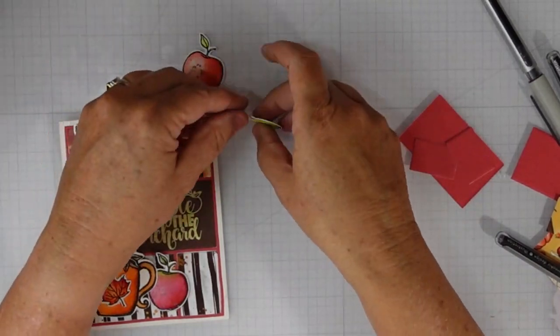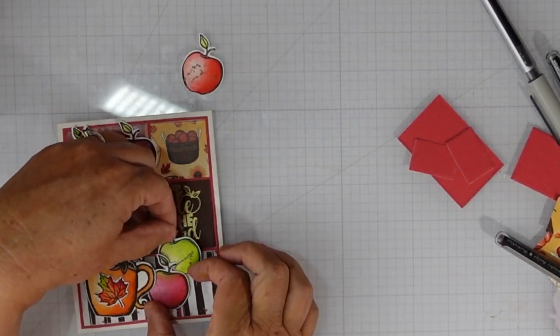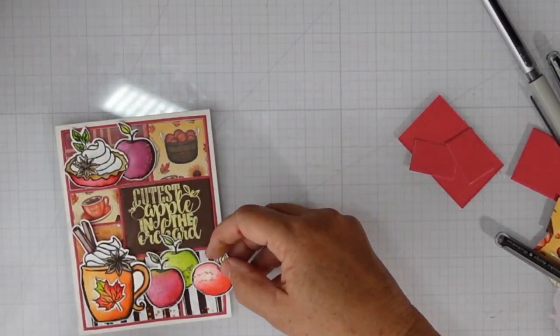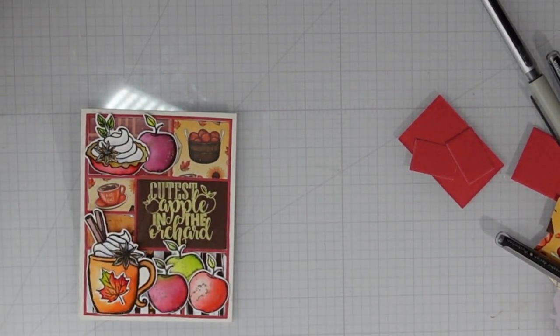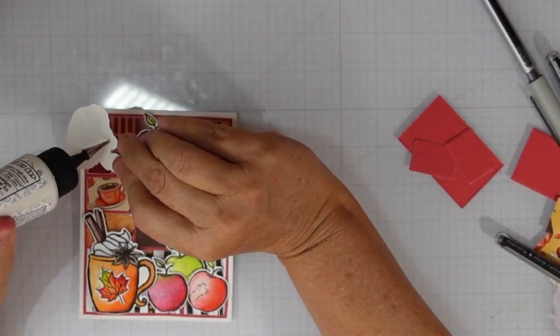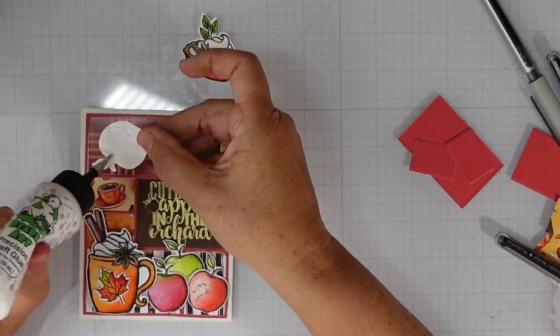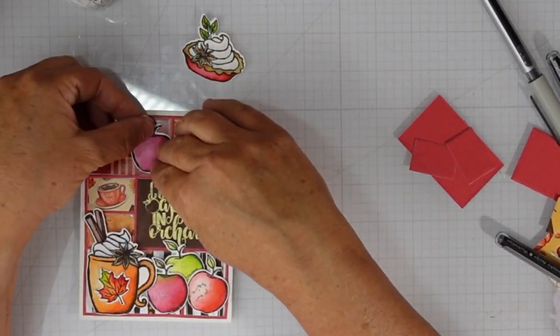As I mentioned, there's two pieces of cardstock layered together for the sentiment. Some of these pieces are going to be glued directly to the pattern paper, so this mahogany apple will get glued straight down.